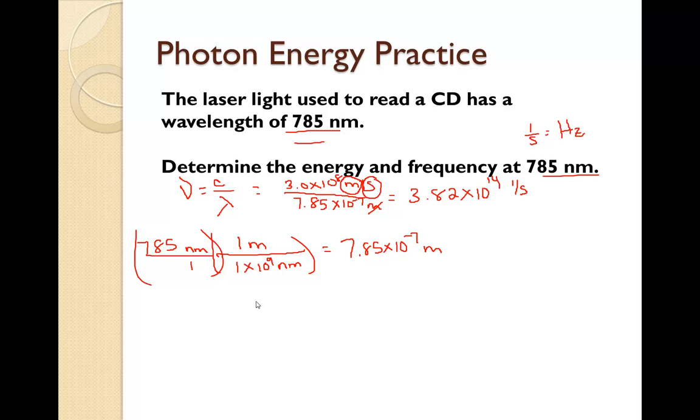Now, to find the energy, energy is equal to Planck's constant times nu, times the frequency, which we just determined. So, Planck's constant is 6.626 times ten to the negative thirty-four. Its units is joules times seconds. We're going to multiply this by the frequency.